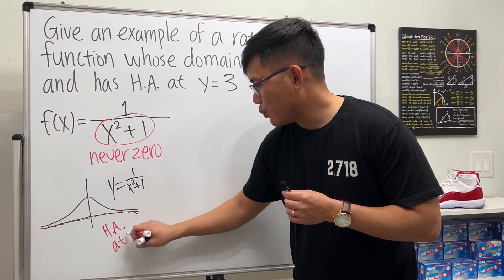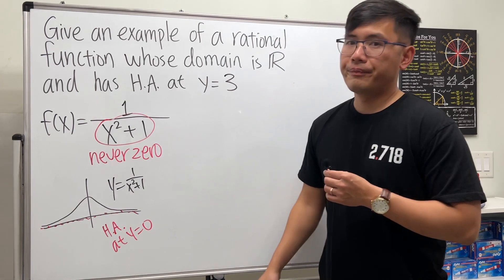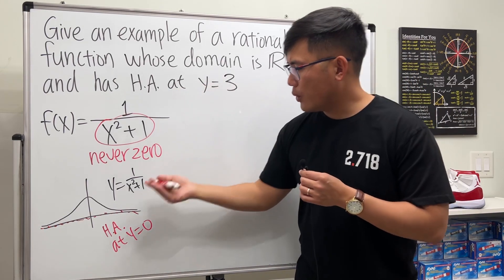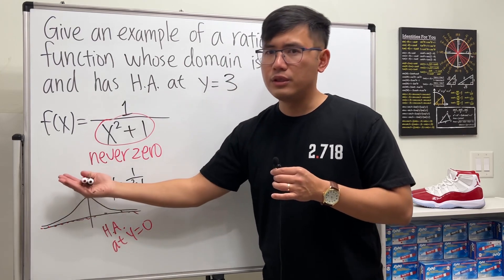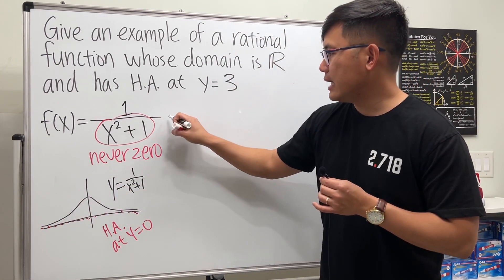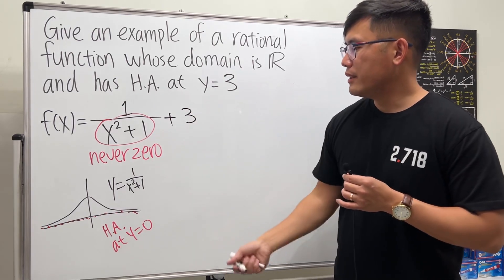That shows you right here it does have a horizontal asymptote at y equals 0. So to satisfy this condition, why don't we just bring up this curve three times?